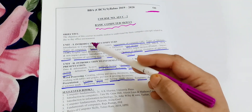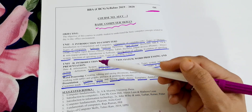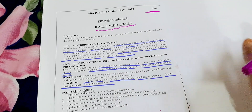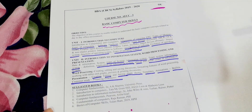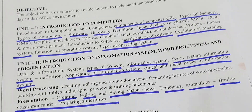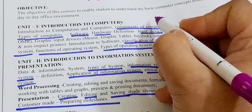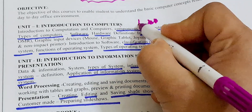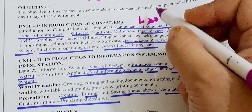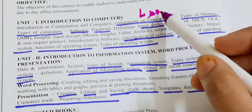In Basic Computer Skills we have two units. Unit one is Introduction to Computers, and unit two is Introduction to Information Systems, Word Processing, and Presentation. In the first unit, the most important long question is Components of Computer — this is the first thing you have to learn.